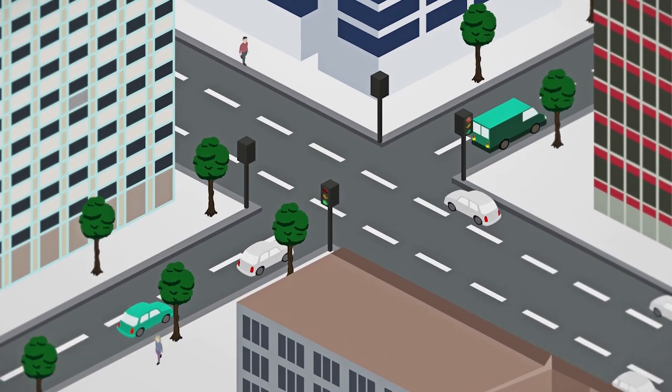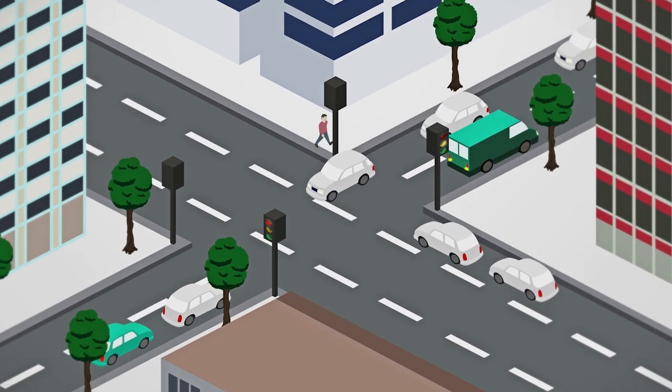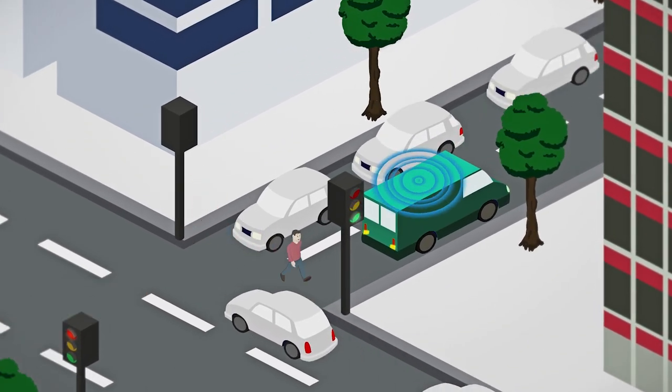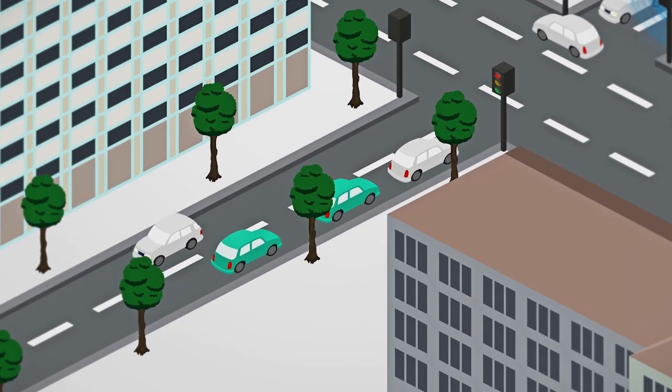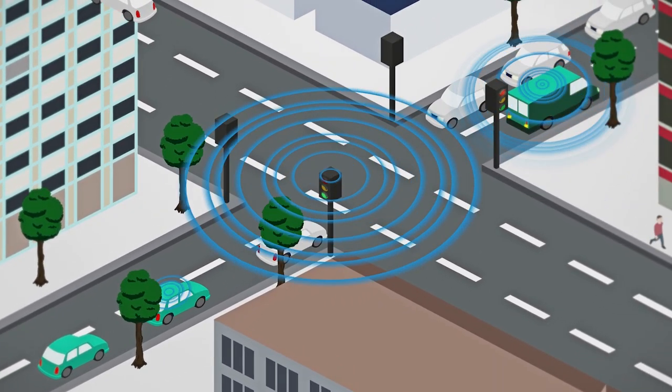In future autonomous driving, unforeseen situations can lead to traffic jams. For example, a delivery van blocking the road. In such a case, autonomous vehicles have to stop the drive for safety reasons.